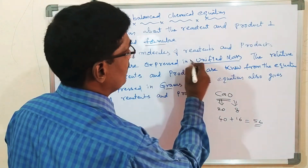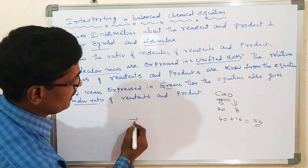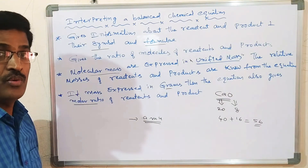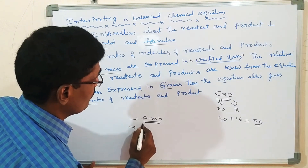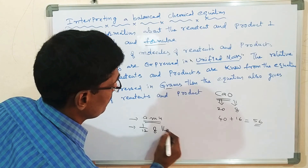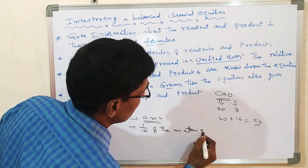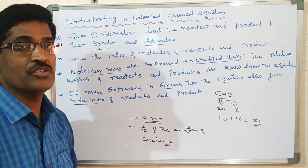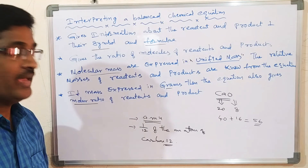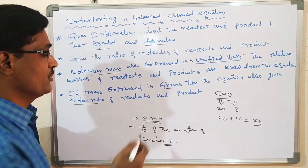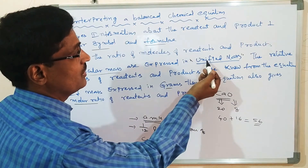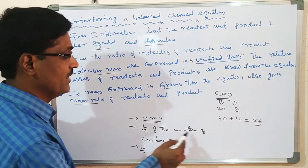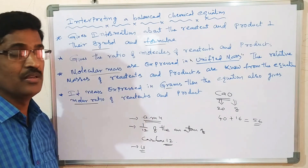Molecular mass is expressed in unified mass, also called atomic mass unit (AMU). Atomic mass unit means 1/12th of the mass of an atom of carbon-12 is called atomic mass unit. You can express it as 'u' or as AMU.